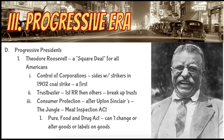Progressivism doesn't just stop with those in society pushing for change — it also trickles up to the leaders of our country. One of those people is Teddy Roosevelt, Theodore Roosevelt. He becomes president after William McKinley is assassinated, and when he comes into office he decides he really wants to clean up society as well, like the muckrakers and progressives. He gives America a 'Square Deal' — the idea that you're going to get a fair deal if you do a good day's work. He controls corporations and earns the nickname 'trust buster,' first targeting the railroads and then breaking up trusts like Standard Oil.